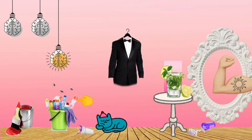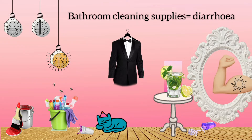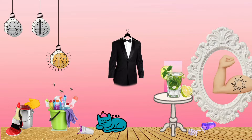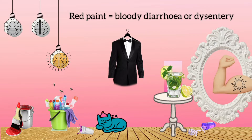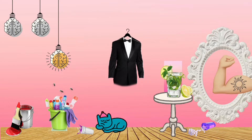There is a green bucket with bathroom supplies, which reminds you that Shigella causes diarrhea. There is also a red paint bucket beside it, reminding you that Shigella causes bloody diarrhea or dysentery. In the bucket you can see a pair of gloves, which signify fingers.